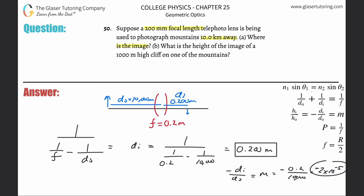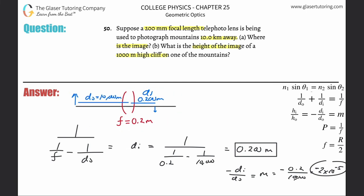Now it says what is the height of the image? What is the height of the image of a 1,000 meter high cliff on one of the mountains? We're going to assume that it's still 10 kilometers away.